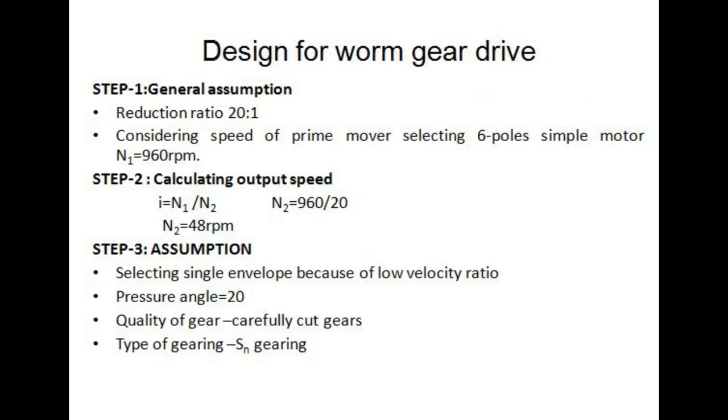Design of worm gear drive Step 1: General assumption. Reduction ratio is 20 to 1. Considering speed of prime mover, selecting 6 volt simple motor where N1 equals 960 rpm.